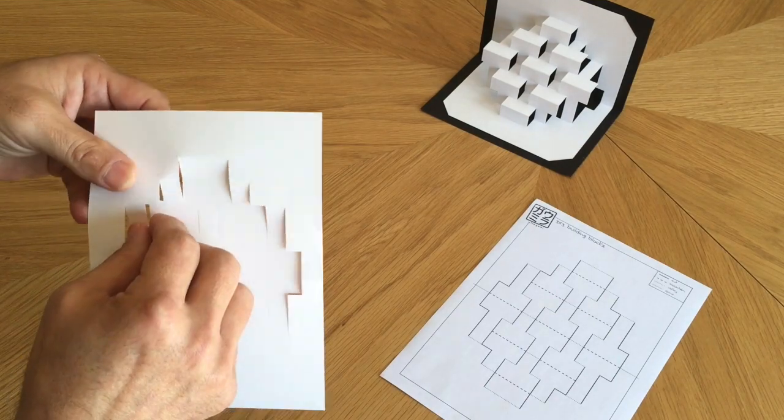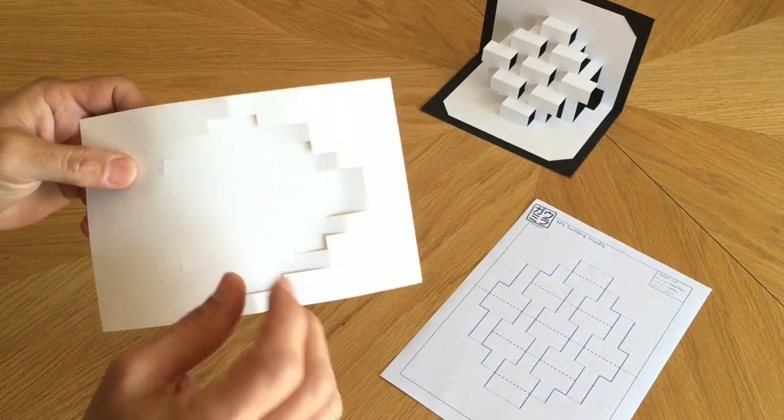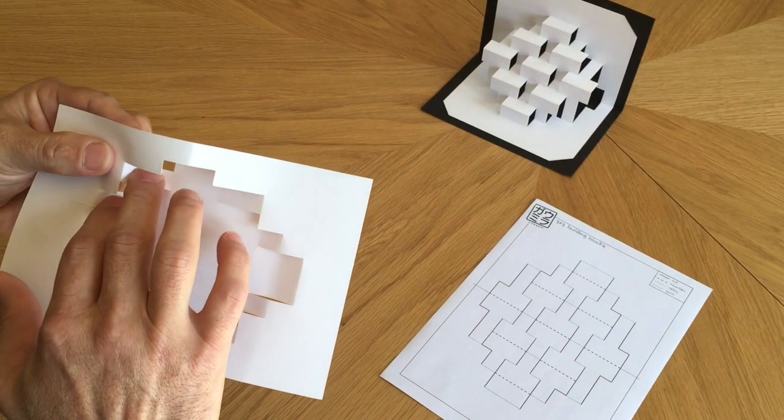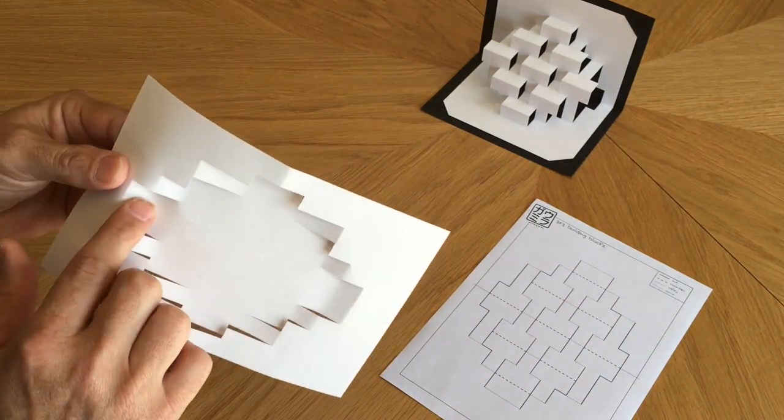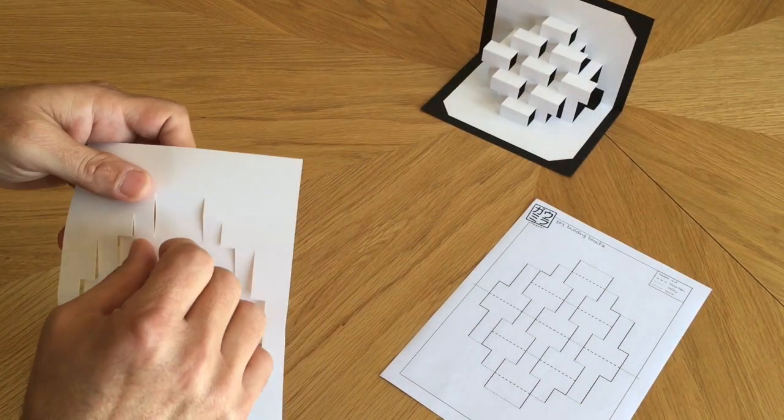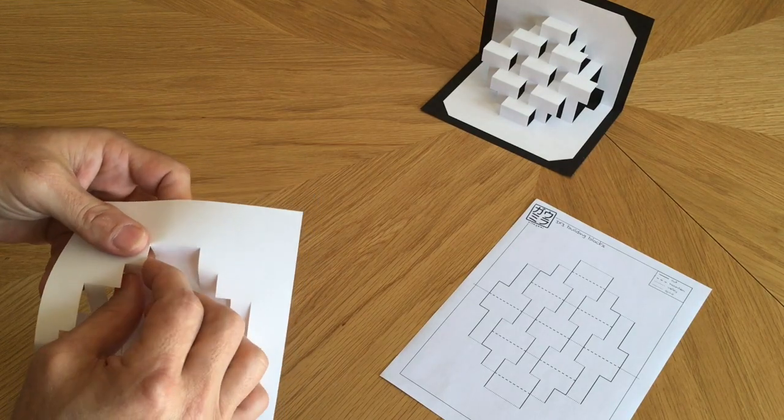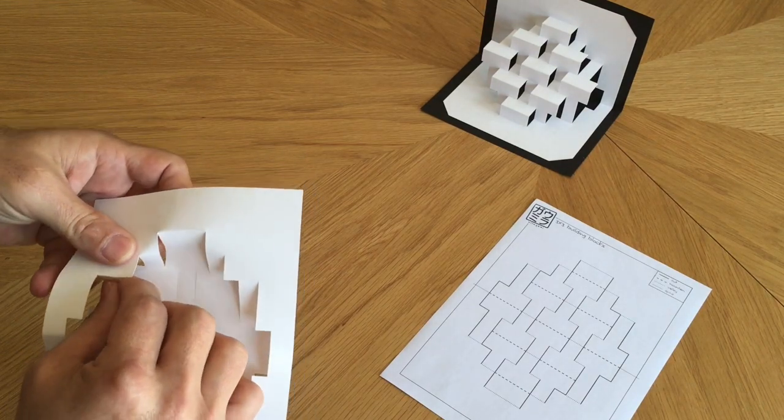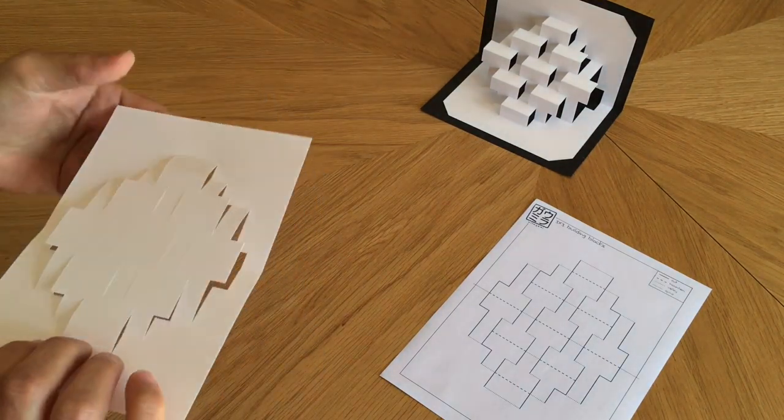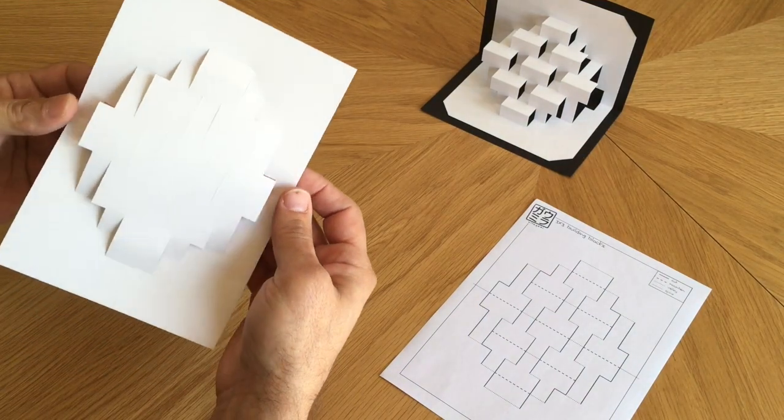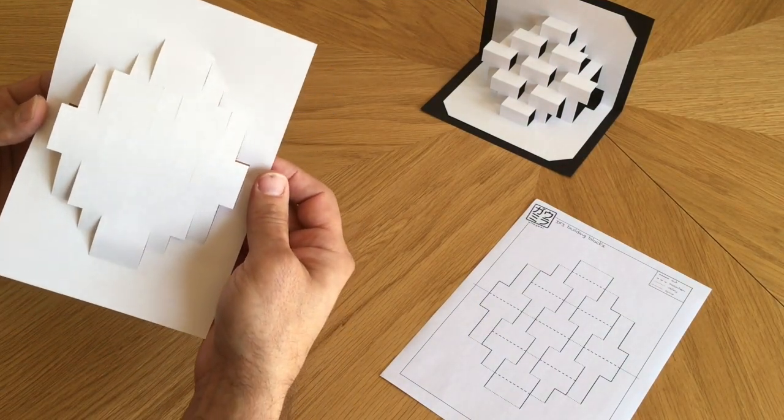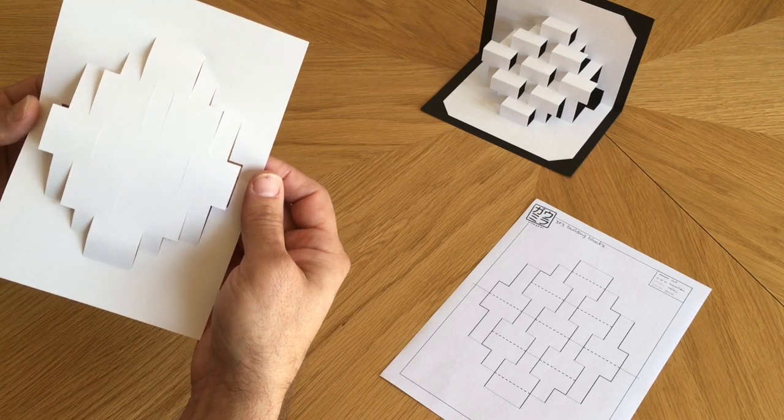We don't have to make these folds super sharp or creased yet. They don't have to be 90 degrees. At this point we're just showing the paper where we want it to go and what direction we want it to fold in the future. And now you can see that the general shape of the model is already starting to pop out of the page.